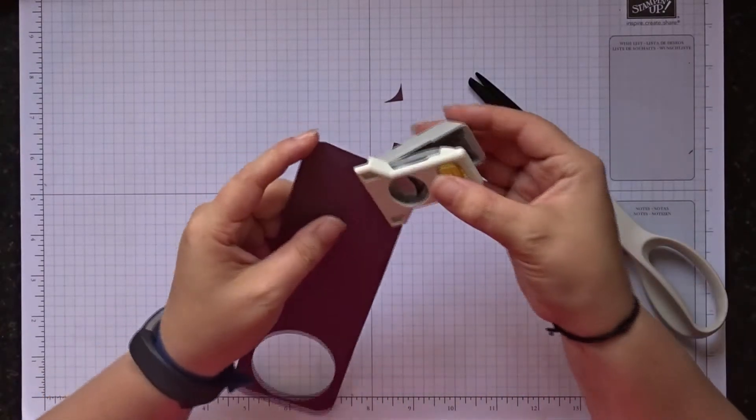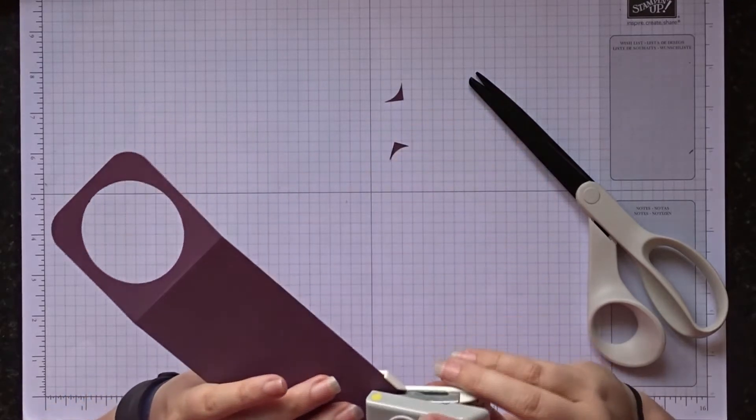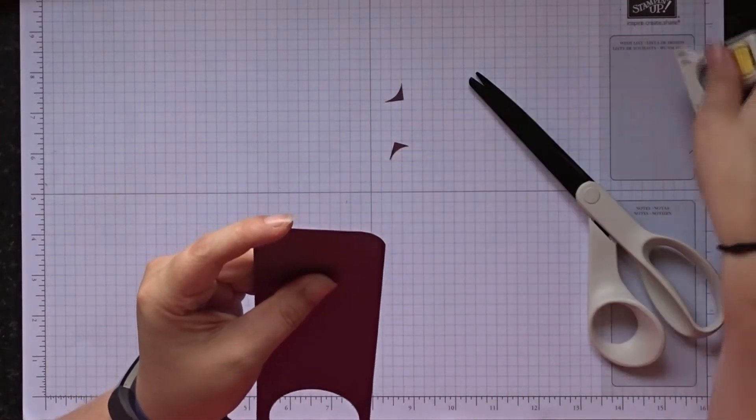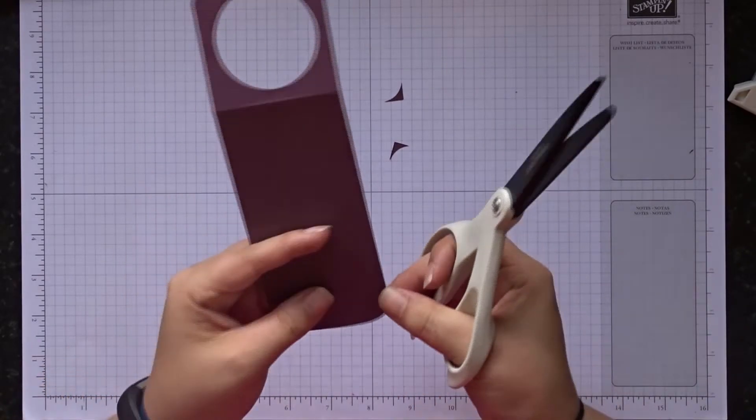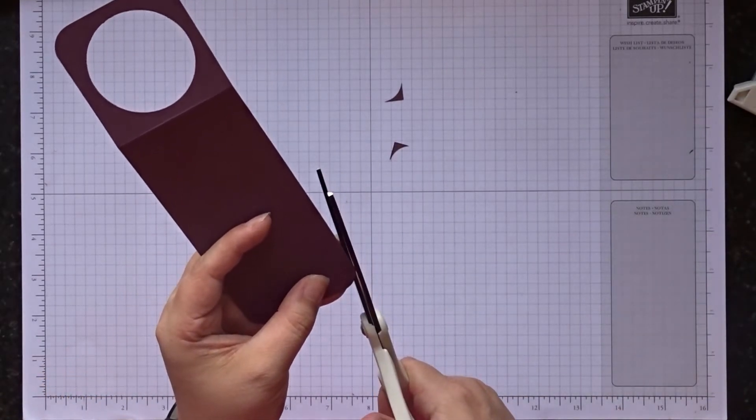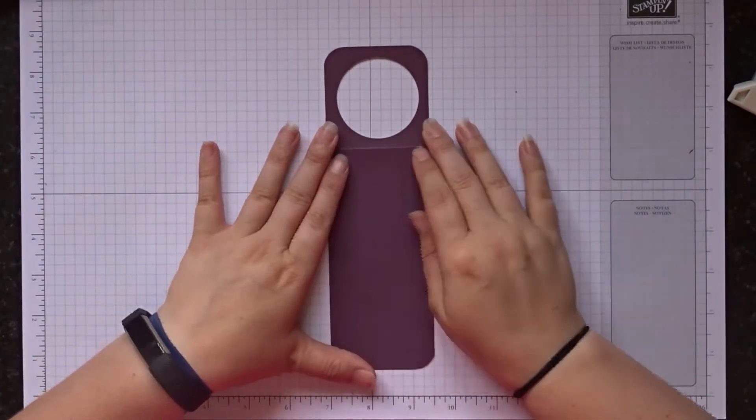Let's have a look one second. So just get your scissors and just neaten the little bits you've missed. There's no issues doing that at all. Okay so there is the base of our gift tag.